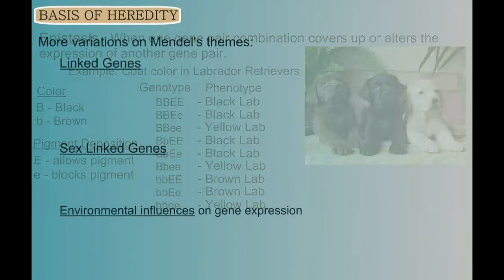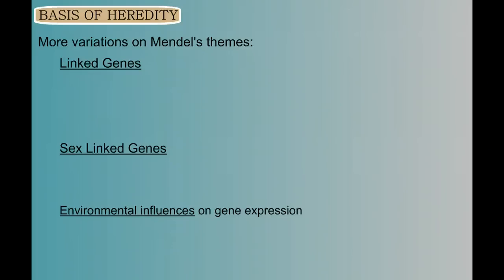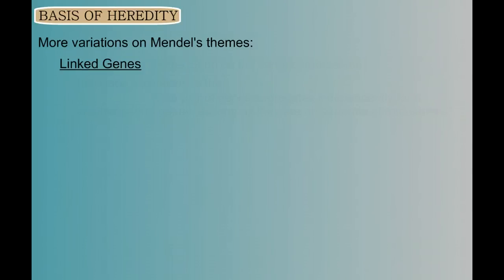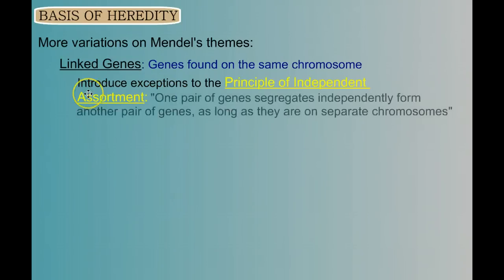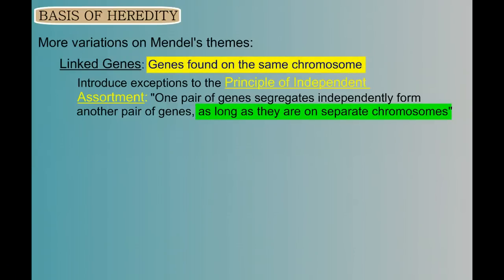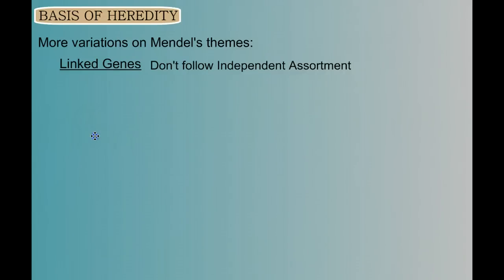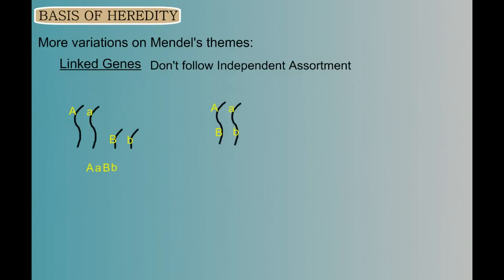We have a few more things to discuss: linked genes, sex-linked genes, and environmental influences. Linked genes are genes that reside on the same chromosome — they introduce exceptions to the principle of independent assortment, which states that one pair of genes assorts independently of another pair as long as they are on separate chromosomes. Here we have two pairs of genes — A genes and B genes. An individual heterozygous for both genes could have them unlinked or linked on the same chromosome, giving the same genotype and phenotype, but very different behavior.